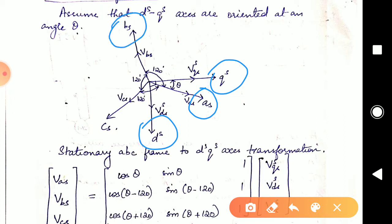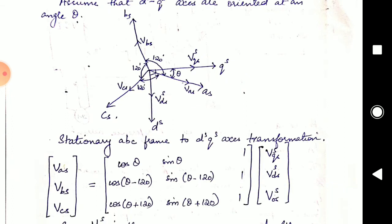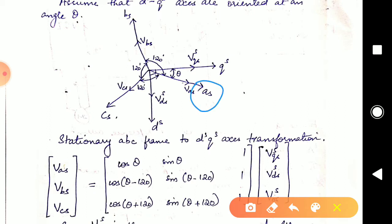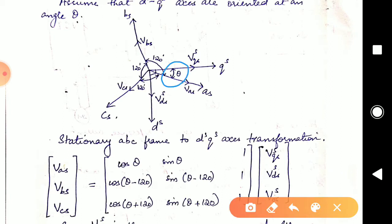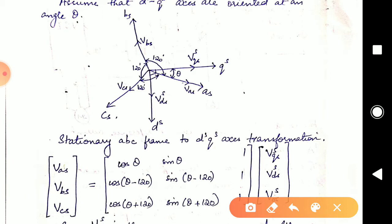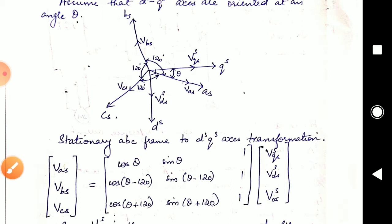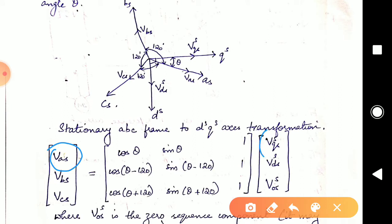Then we will take BS as our reference and resolve QS and DS into the BS axis. Finally, we will take CS and resolve DS and QS into the CS axis. In the first case, taking AS as reference — voltage VAS — and applying simple resolving technique, the angle theta is adjacent to VAS and VQS. Therefore cos theta equals VAS divided by VQS, giving VAS equals VQS times cos theta. This has been written in matrix form. For VDS, since the angle is 90 minus theta, you get sin theta. So VDS equals VQS times sin theta.